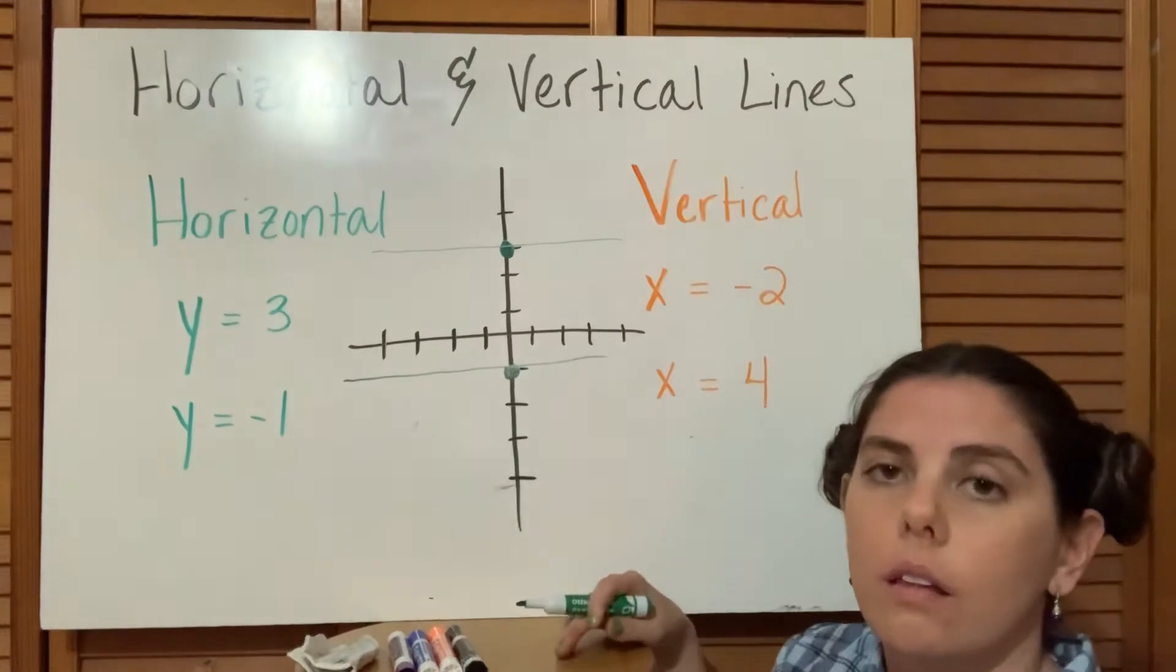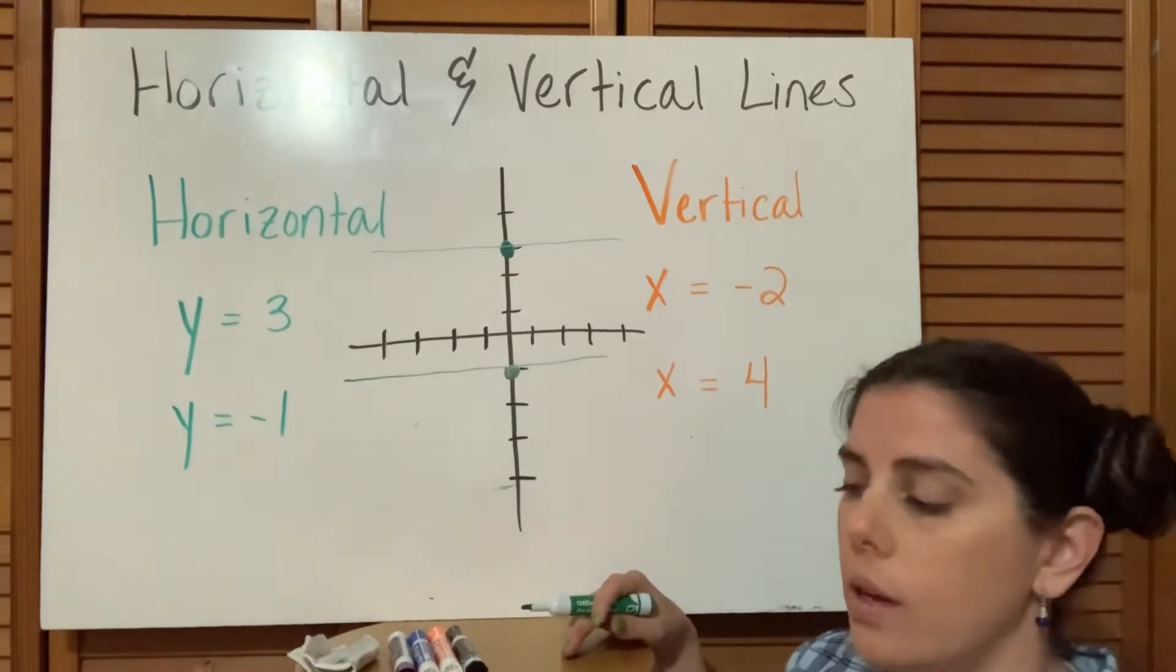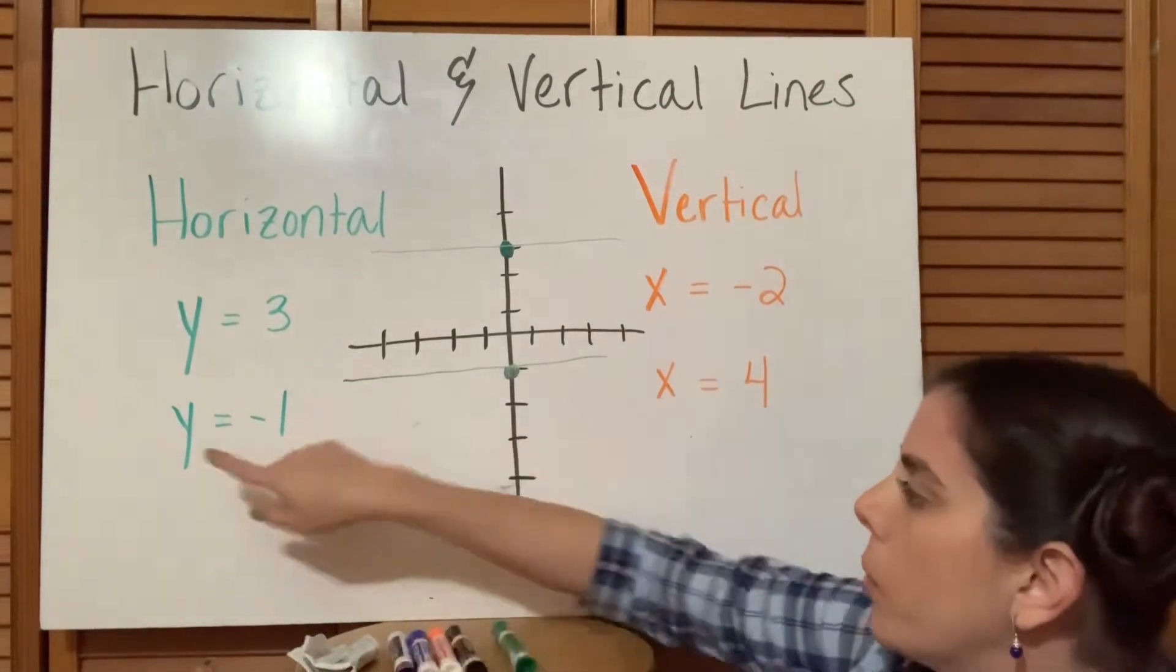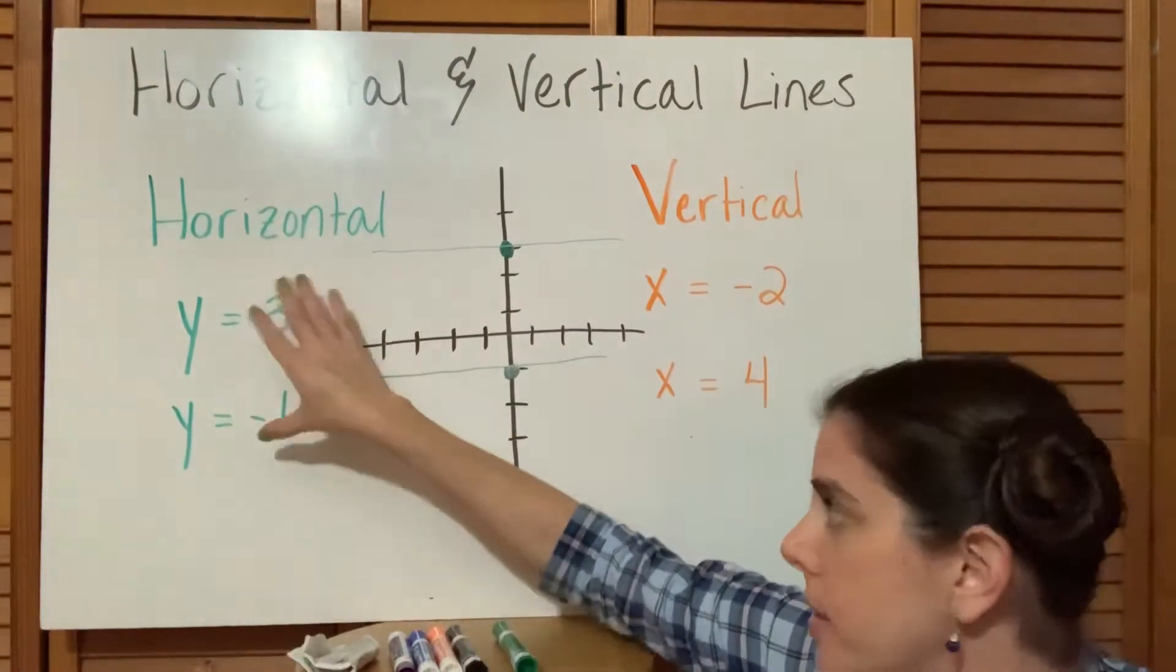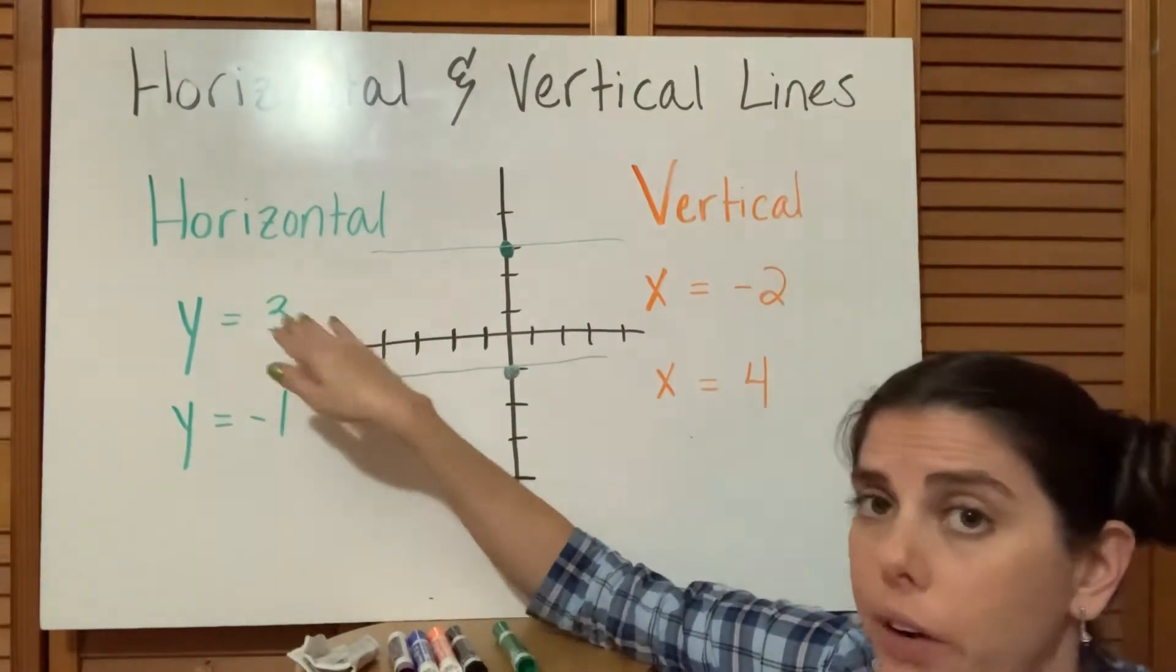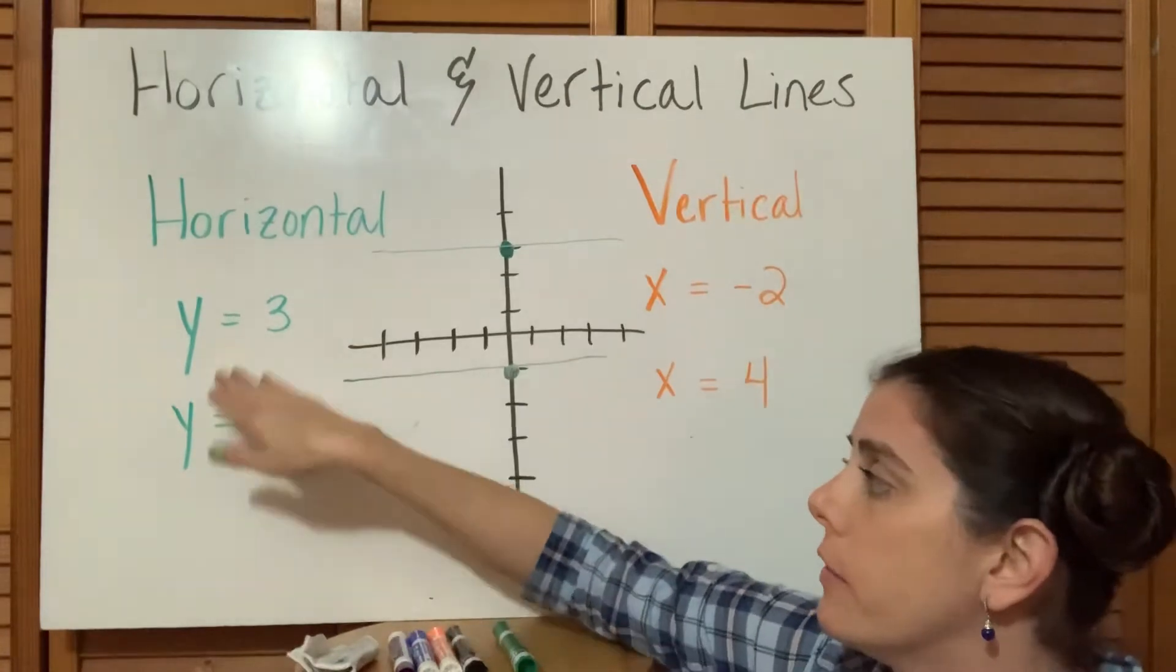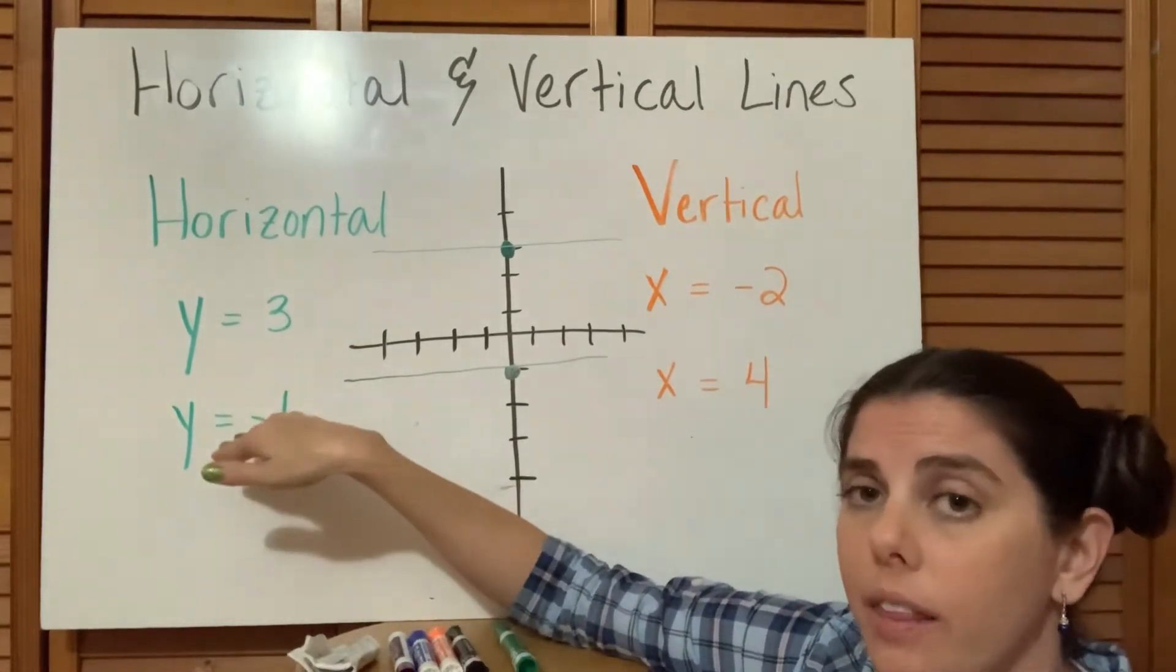That would be the line represented by y equals negative 1. So whenever we have a y equals and it's just a number and there's no x variable with it, this is a very easy way to identify that it's a horizontal line.